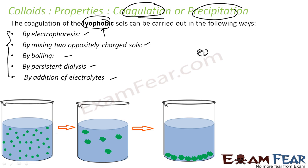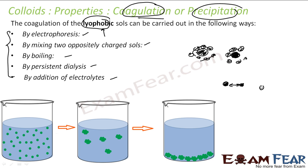Please note, coagulation is only for lyophobic sols. This lyophobic particle hates the solvent, but since it has some charge on it, and other lyophobic particles also have some charge, they repel each other and remain in solution due to Brownian movement and other factors — the colloid is stable. But if you remove this charge, the particles come in contact with each other, form bigger particles, and fall down with the force of gravity. There are different ways to achieve coagulation: electrophoresis, mixing two opposite charged sols, boiling, dialysis, and addition of electrolytes.